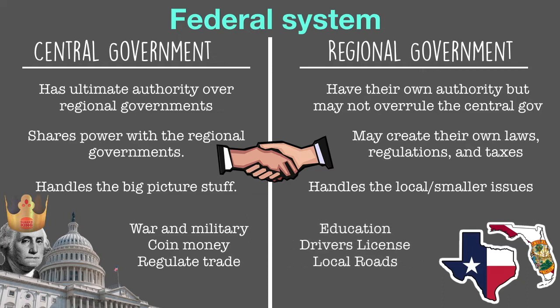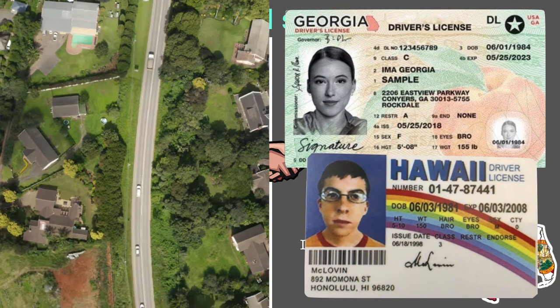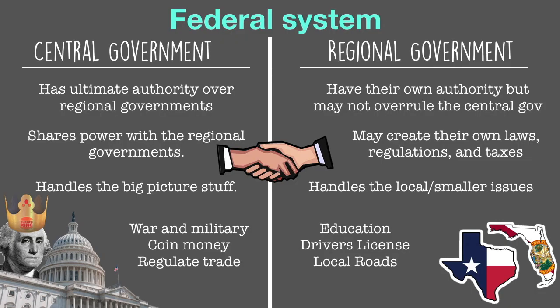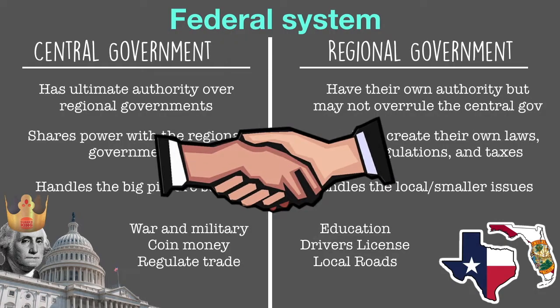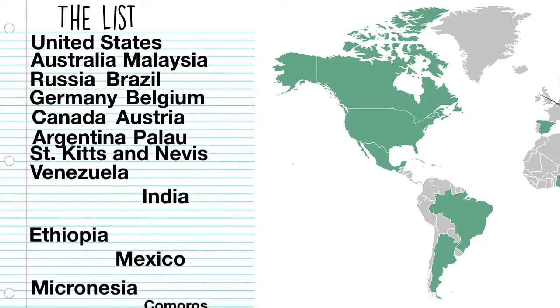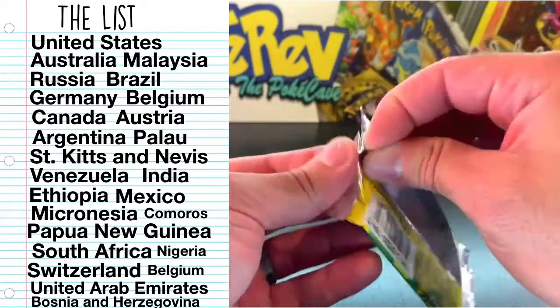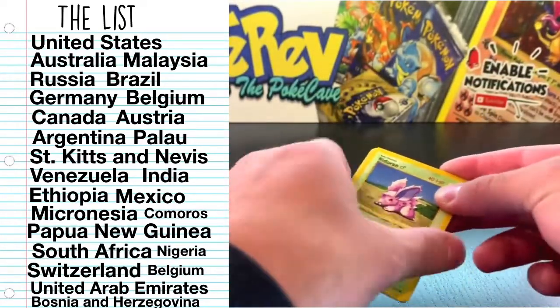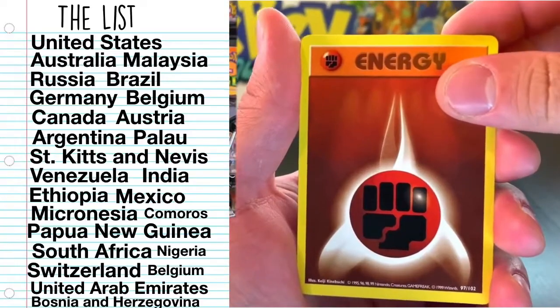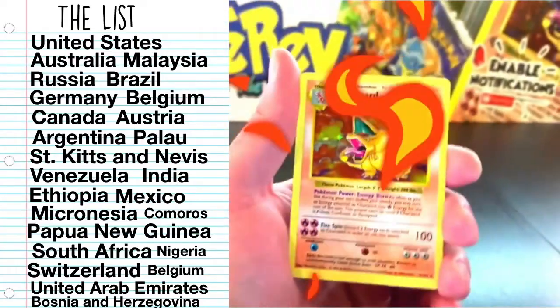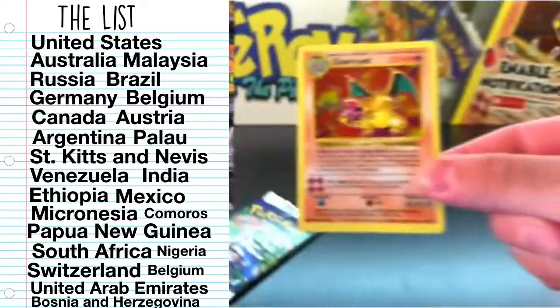Things like educational standards, driver's licenses, how old you need to be to have one, and what we should be doing with our local roads. Federal systems are all about sharing power, and these are kind of rare. If you look around the world at all the countries that have a federal system, you'll find about 25. That number might seem like a lot, but when you consider there's over 190 countries in the world, this roughly equals 13% of countries.